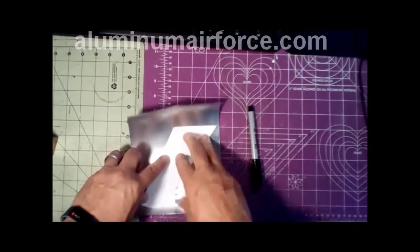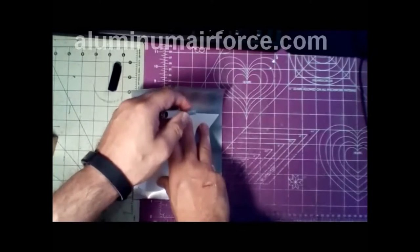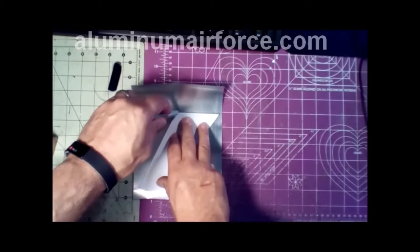Now we're going to grab our Ultra Fine Point Sharpie, press down, and trace around this part of the wing, this F-86 Sabre template wing.